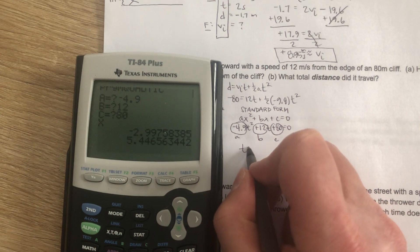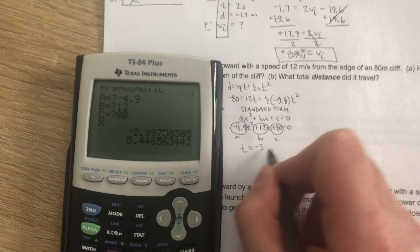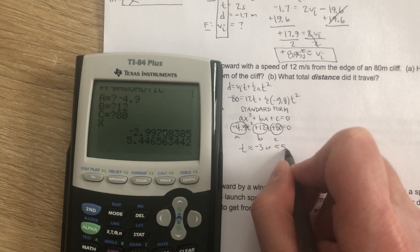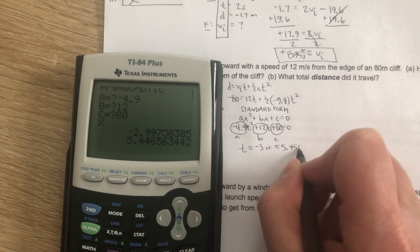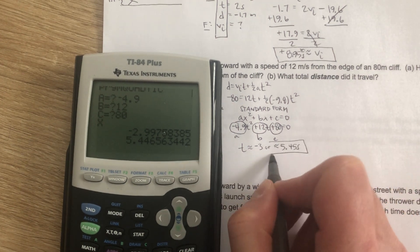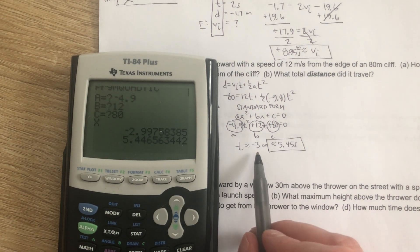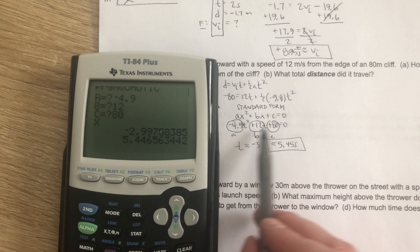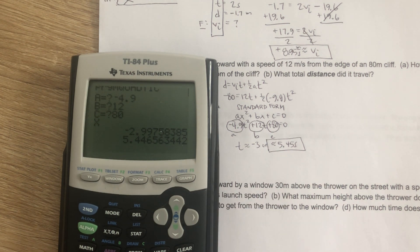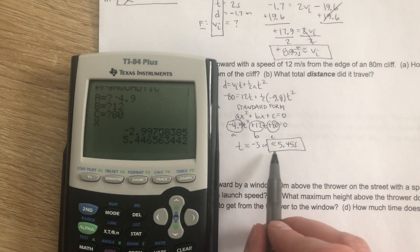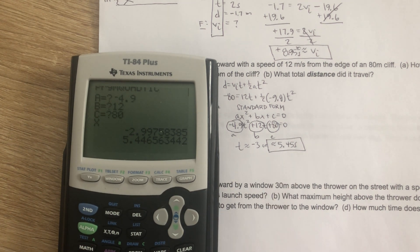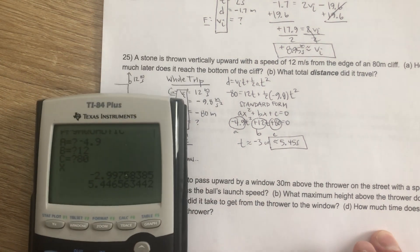So time is either approximately negative 3 seconds, or approximately 5.45 seconds. So here's a case where you have to separate the pure math from the physics application of it. Negative 3 is a perfectly valid mathematical solution to this equation. But since in this case, T represents time, we know we have to have positive time. So that's the answer to our question, how much total time is it in the air, or how much later does it reach?